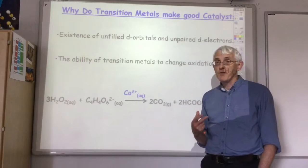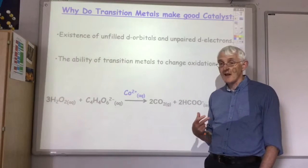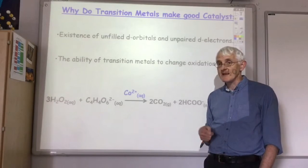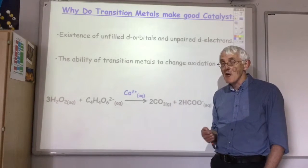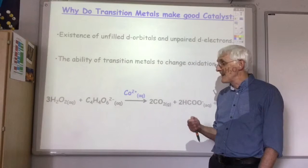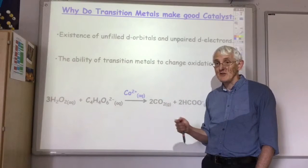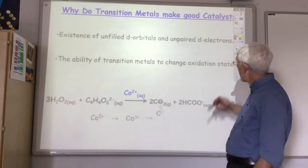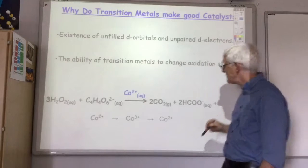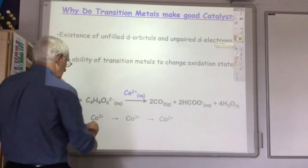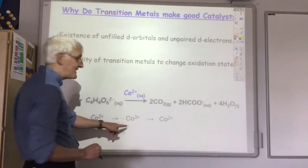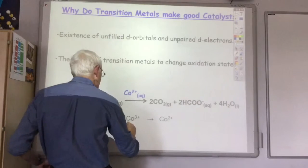Cobalt 2+ gives the otherwise colorless solution a nice pink color. But what we notice as the reaction proceeds is that when the reaction really gets going fast, the Cobalt 2+ changes from pink to green. And that's because the Cobalt 2+, which is pink, has been oxidized to Cobalt 3+, which is green.